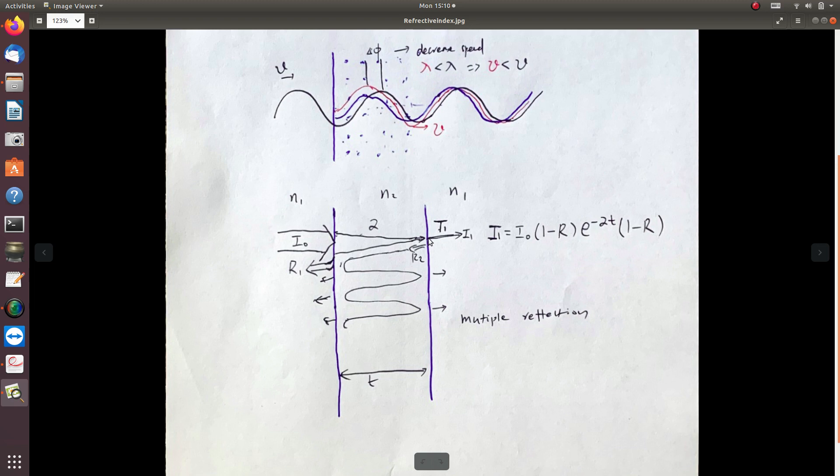Then the light goes to the second interface. Some light will reflect again—the reflectance is the same as the first interface. Some light will pass through, transmitted through the media. We will calculate the intensity of the light through this process.